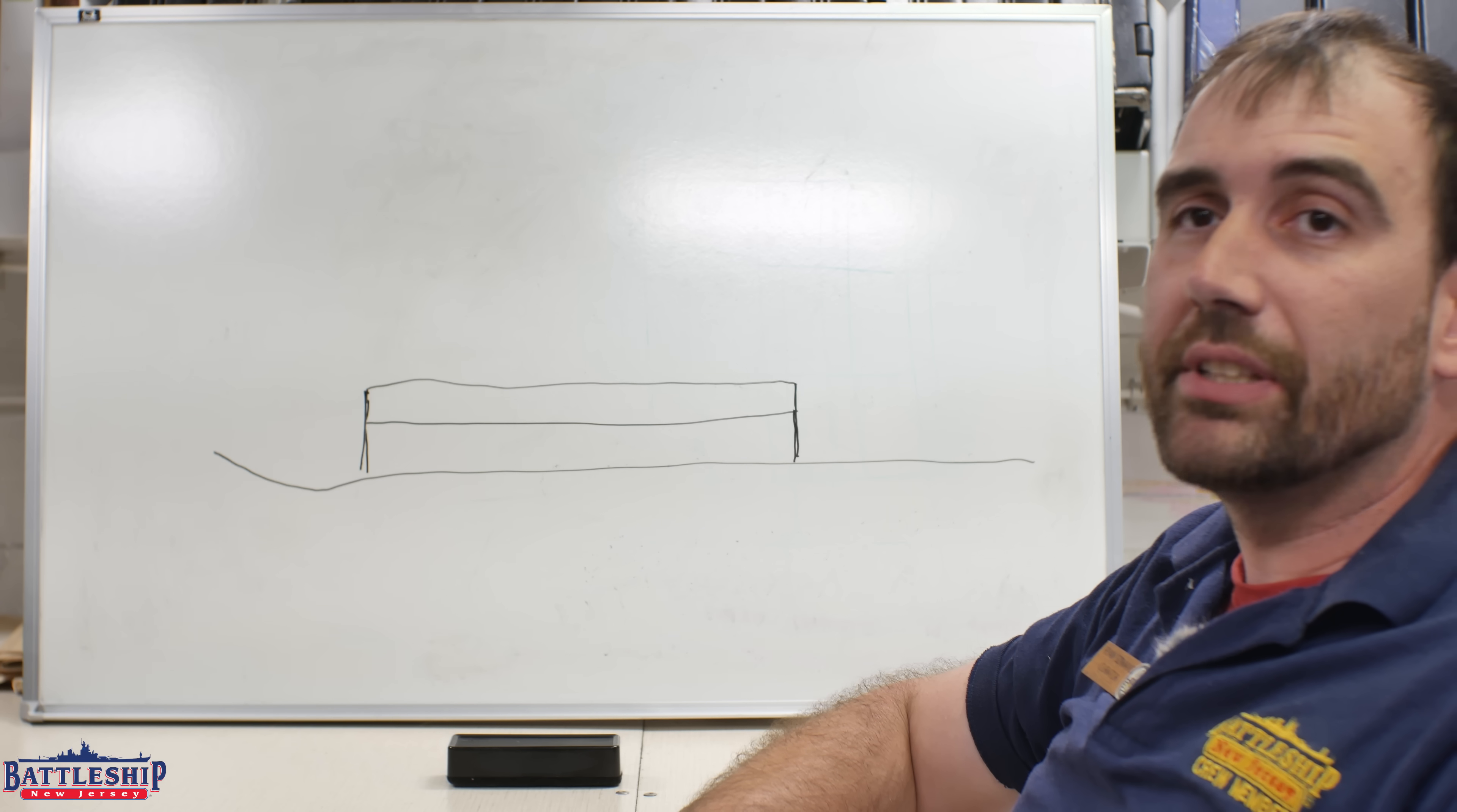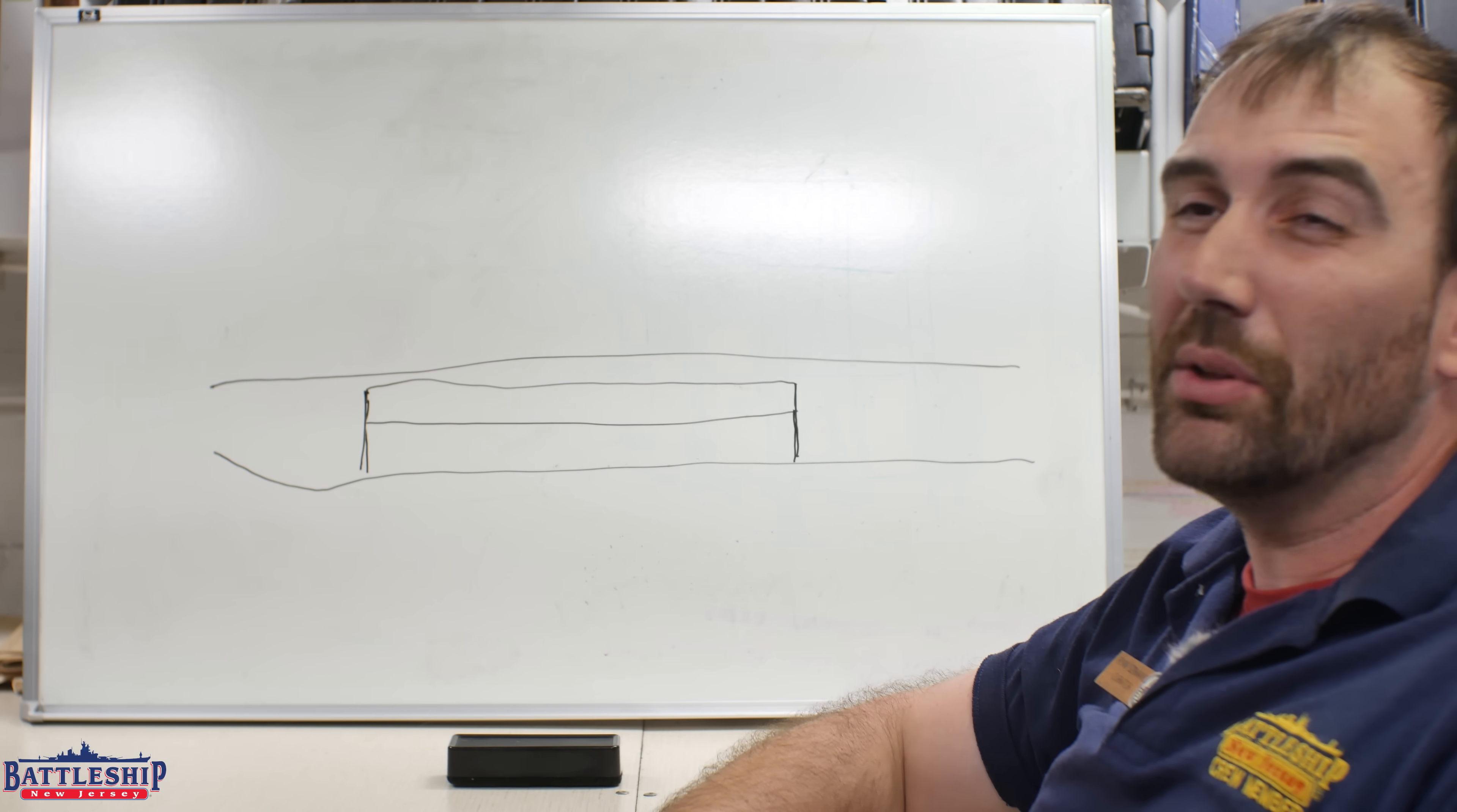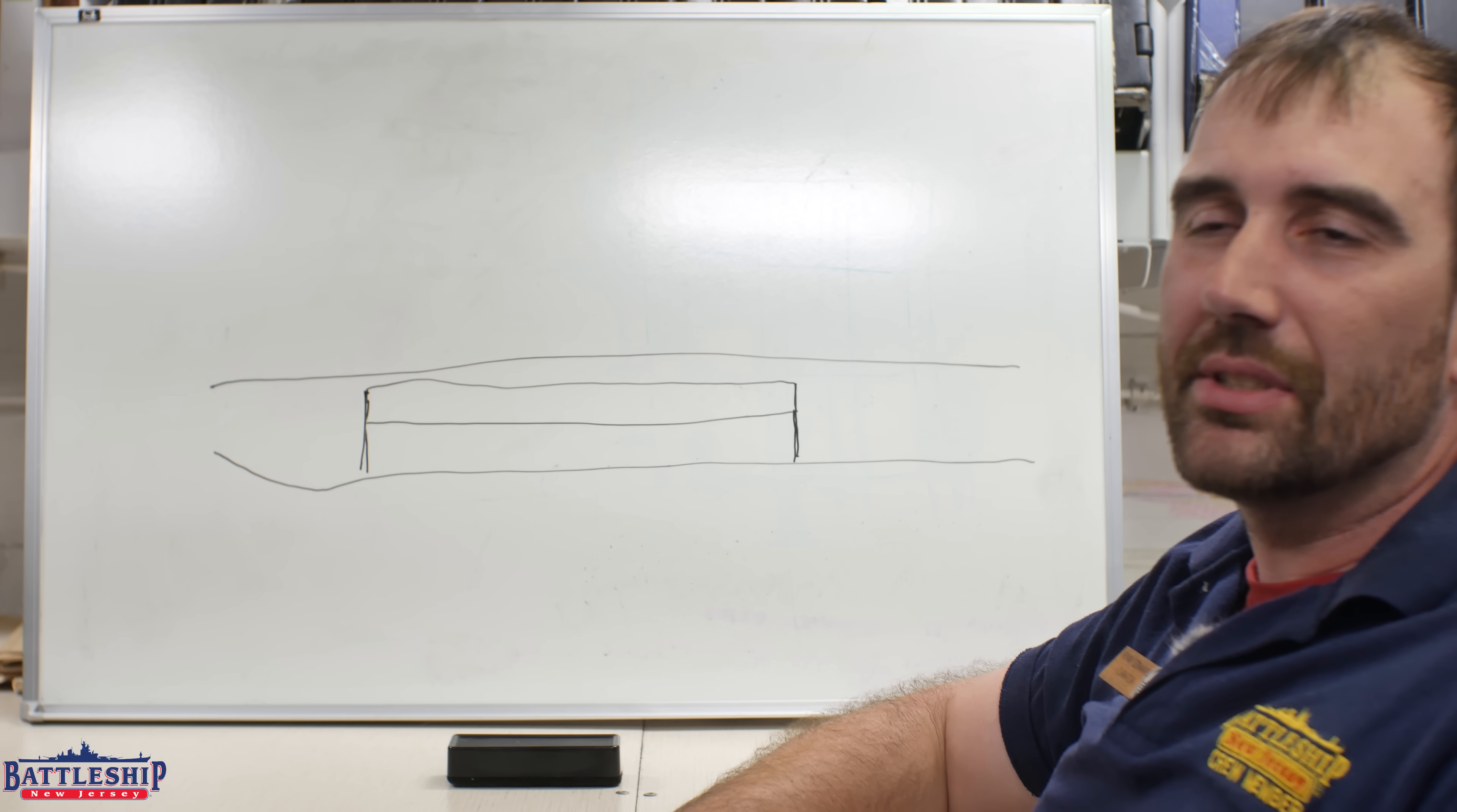In addition to the armored deck, New Jersey also has a splinter deck one level above that. It's only about an inch and a half thick, just thick enough to detonate high capacity shells or decap armor-piercing shells, so that by the time they hit the main armored deck below, it's not going to do significant damage.